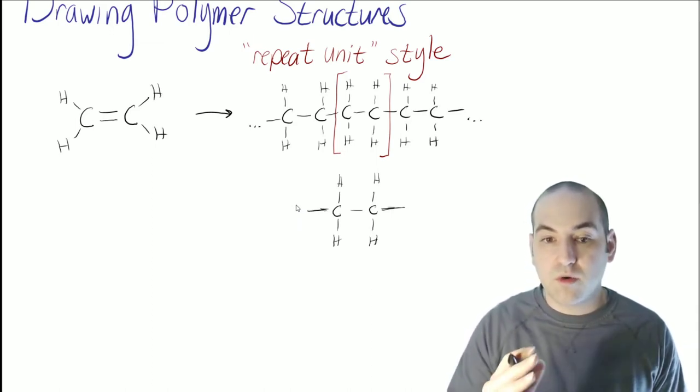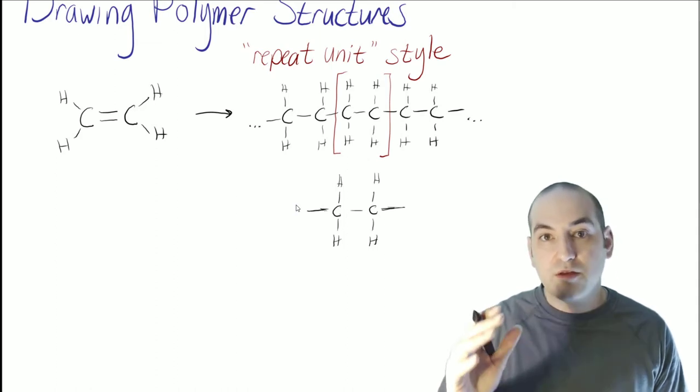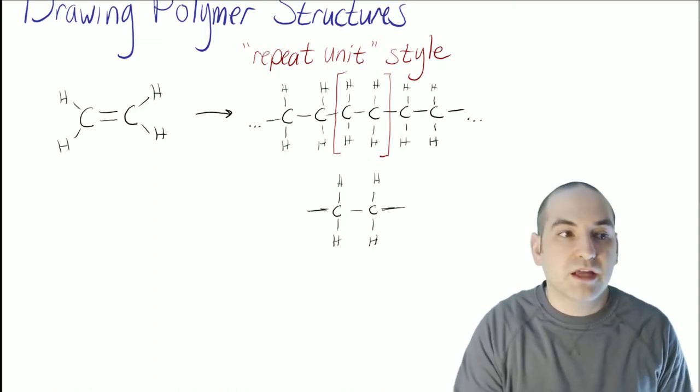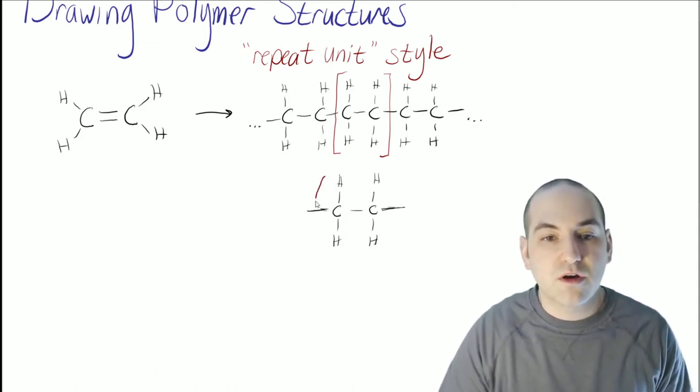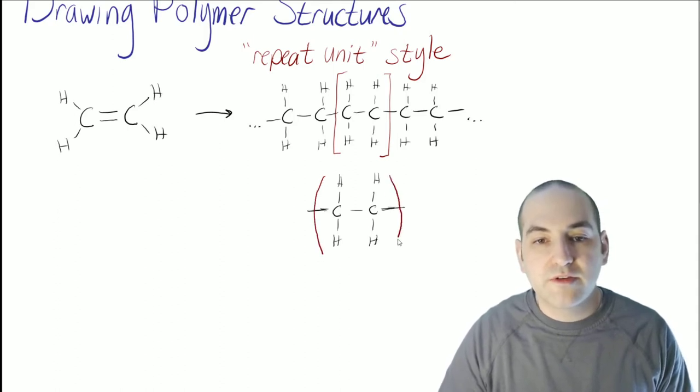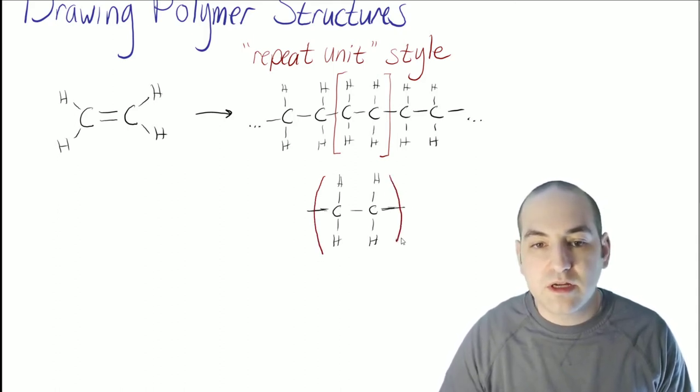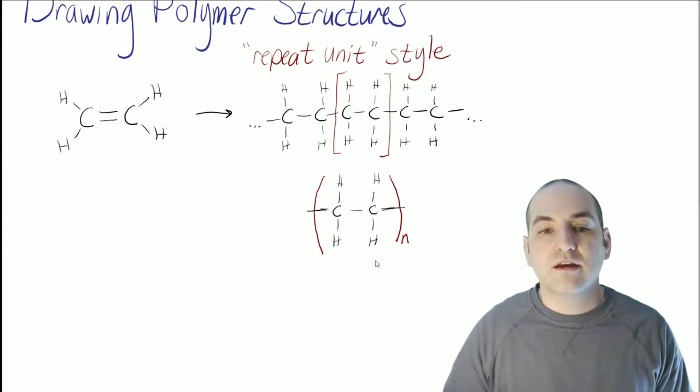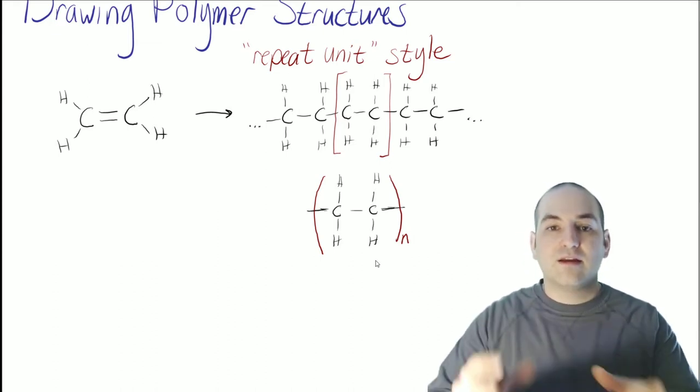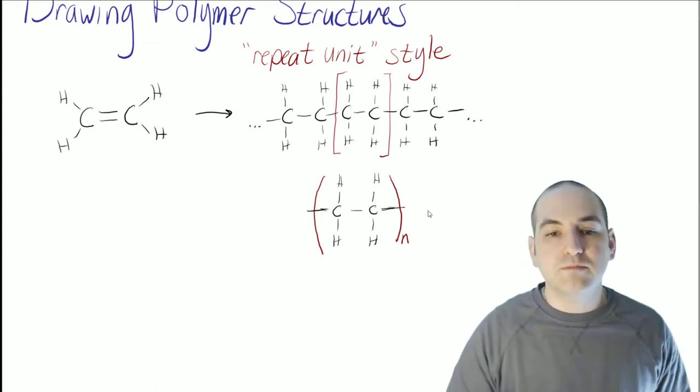So if we just show one part of what's repeating, and then we know it's repeating over and over again, that's enough to show what the structure is. So the way that we do that is we use parentheses or brackets, and we put an N just to say it's this thing N times.